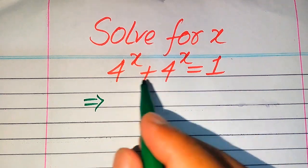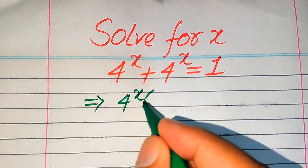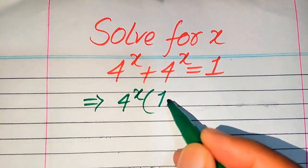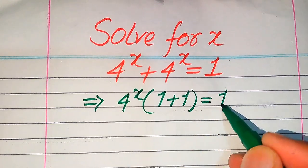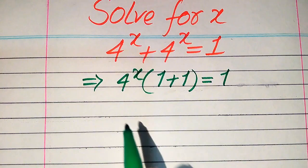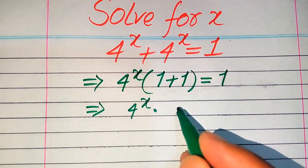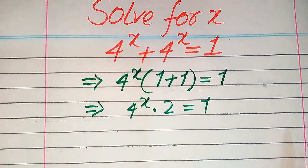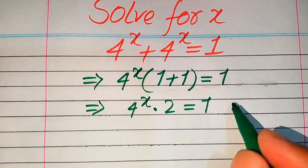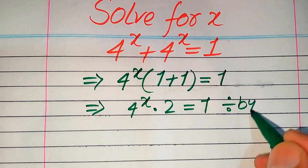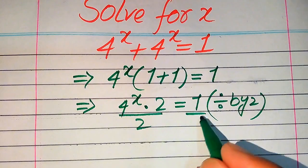Now first, you see here we have 4 to the power of x on both of these terms. So when we take common 4 to the power of x, from here we get only 1, and plus from here we get 1, which equals 1 only. Further in the next step, we need to add 1 plus 1, so when we add 1 plus 1 it becomes 2, and we have 4 to the power of x times 2 equals 1. We need to move this 2 to the right hand side, or in other words, we divide both sides by 2.